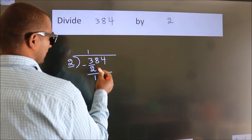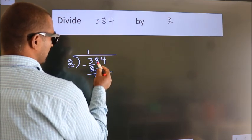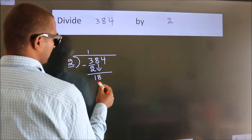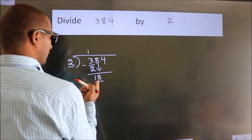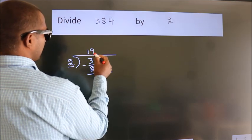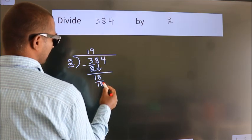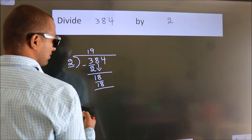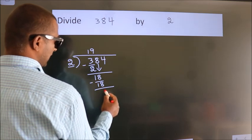After this, bring down the beside number. So, 8 down. So, 18. When do we get 18? In 2 table, 2 9s, 18. Now, we subtract. We get 0.